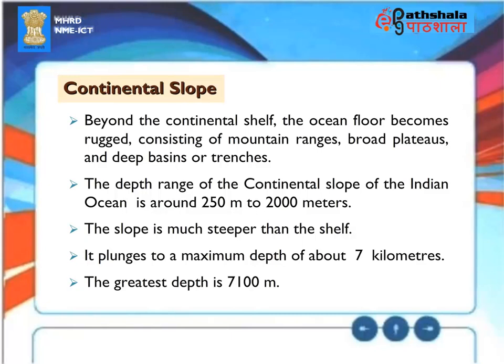Continental Slope. Beyond the continental shelf, the ocean floor becomes rugged, consisting of mountain ranges, broad plateaus, and deep basins or trenches. The depth range of the continental slope of the Indian Ocean is around 250 to 2,000 meters. The slope is much steeper than the shelf, plunging to a maximum depth of about 7 kilometers. The greatest depth recorded is 7,100 meters.